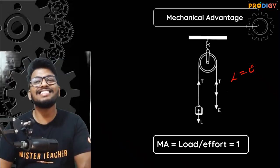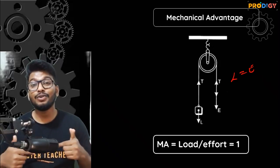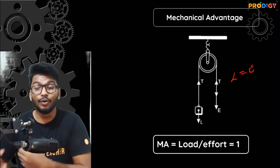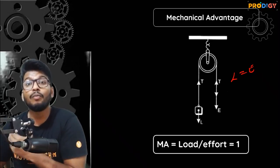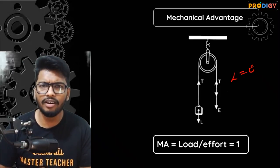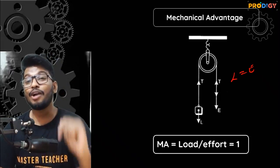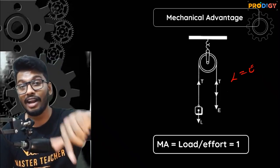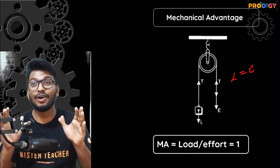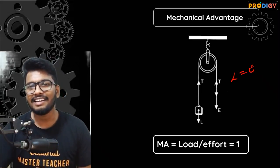The only advantage of a single fixed pulley is that it helps you to change the direction — it is used for the convenience of changing direction. It does not help us in reducing the effort, because whatever is the load, the effort is exactly the same. So mechanical advantage = load / effort = 50 / 50 = 1. For an ideal pulley with no friction, mechanical advantage equals 1.